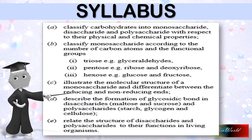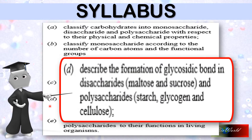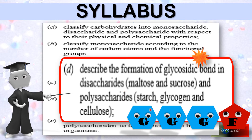In today's video, I'm covering syllabus part D — the formation of glycosidic bonds in disaccharides such as maltose and sucrose. I'll also be touching on polysaccharides such as starch and glycogen. So let's begin.